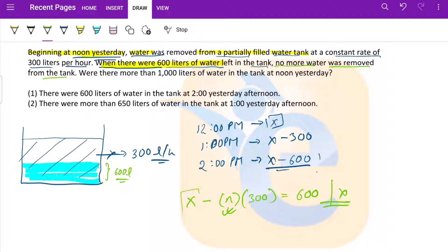If we know the initial amount of water we can get the value of n, but we do not know the initial amount of water. Were there more than 1000 liters of water in the tank at noon yesterday? So basically we need to estimate the initial amount of water. There are two variables: initial amount of water and the number of hours the tank was flowing before shutting off.